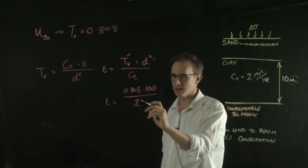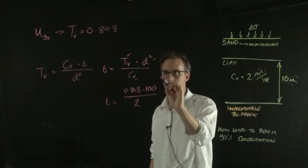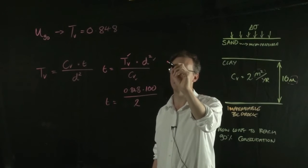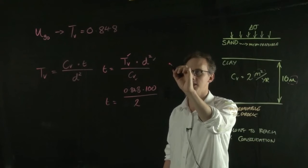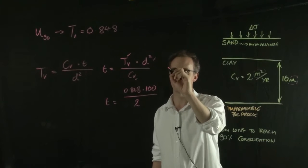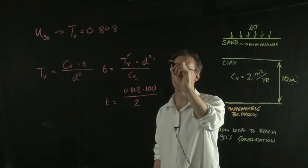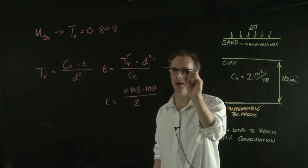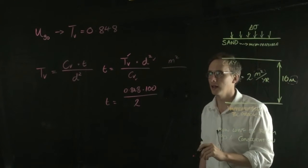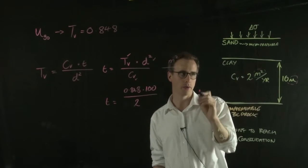So what you're left with is a value in terms of units. Your TV value is dimensionless or unitless. Your D value is in meters and you're squaring it, so you've got meters squared. And you're dividing it by meters squared per year.